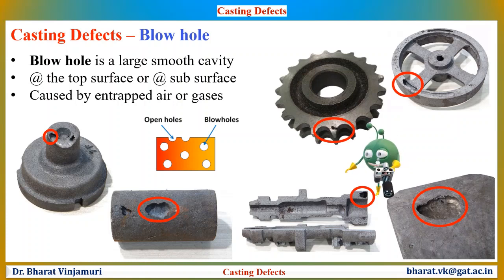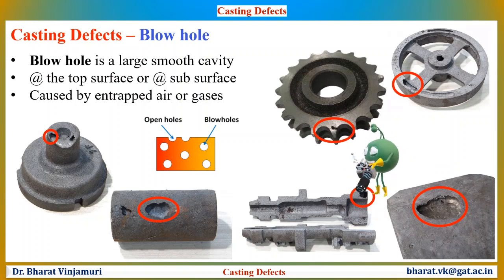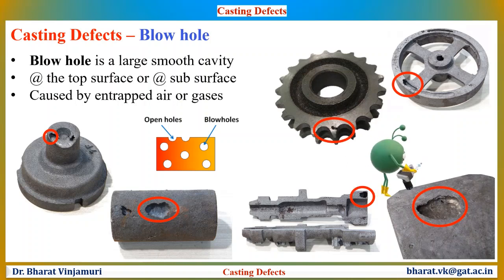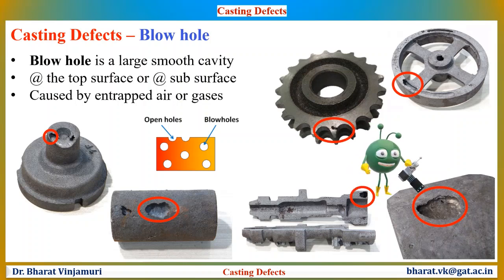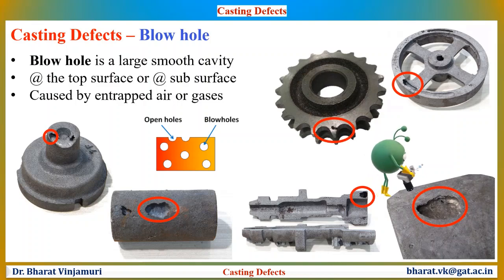A blow hole is a large smooth cavity below the top surface of the casting caused by air or gas entrapment. Blow holes that appear on the surface of the casting are easier to detect. A subsurface blow hole appears on the inside of the casting and usually is not visible until machining — these can be difficult to detect before machining. To detect subsurface blow holes, we need to use non-destructive testing methods like ultrasonic testing, magnetic testing, or X-ray analysis.